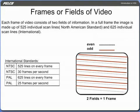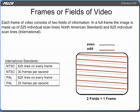Each frame of video consists of two fields of information. In a full frame, the image is made up of 525 individual scan lines, North American Standard, NTSC, and 625 individual scan lines, International, PAL. When the odd and even fields come together, it is known as frame interlacing. In order for a recorder to record longer periods of time, the number of frames per second must be reduced. This reduction causes a jerky motion playback or screen flickering.